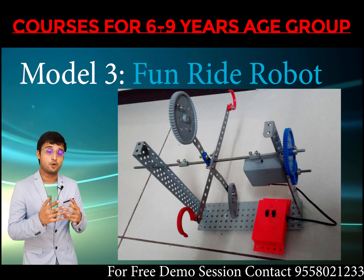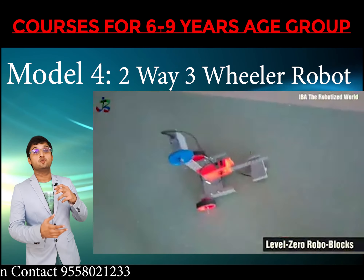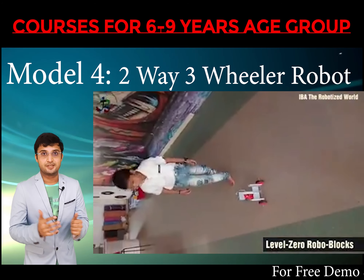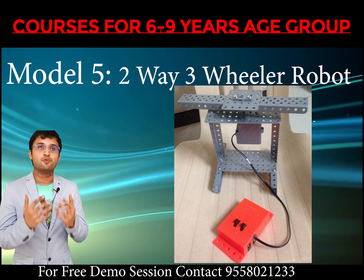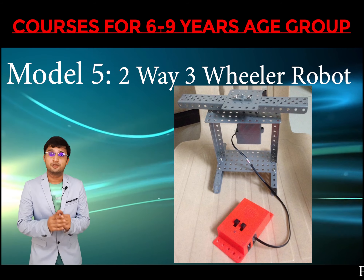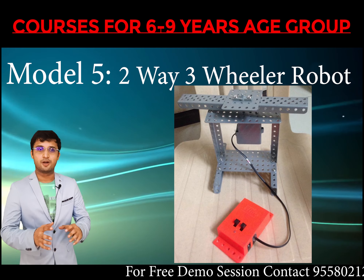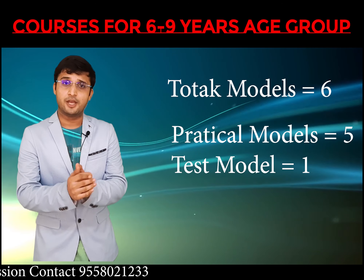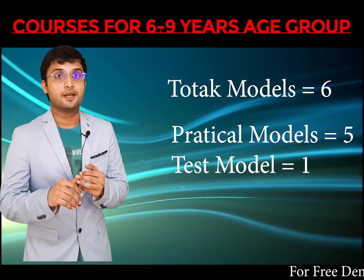The fourth model is a two-way three-wheeler robot — a special robot that can move in two directions — built with metal plates, motors, and batteries. The fifth model is a Robocop with a helicopter design. After completing five models, kids are given a test task: they must build a model and present it, and based on that we decide whether to move to the next level.